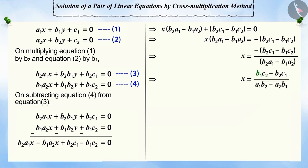x is equal to b1c2 minus b2c1 divided by a1b2 minus a2b1, where a1b2 minus a2b1 is not equal to 0.